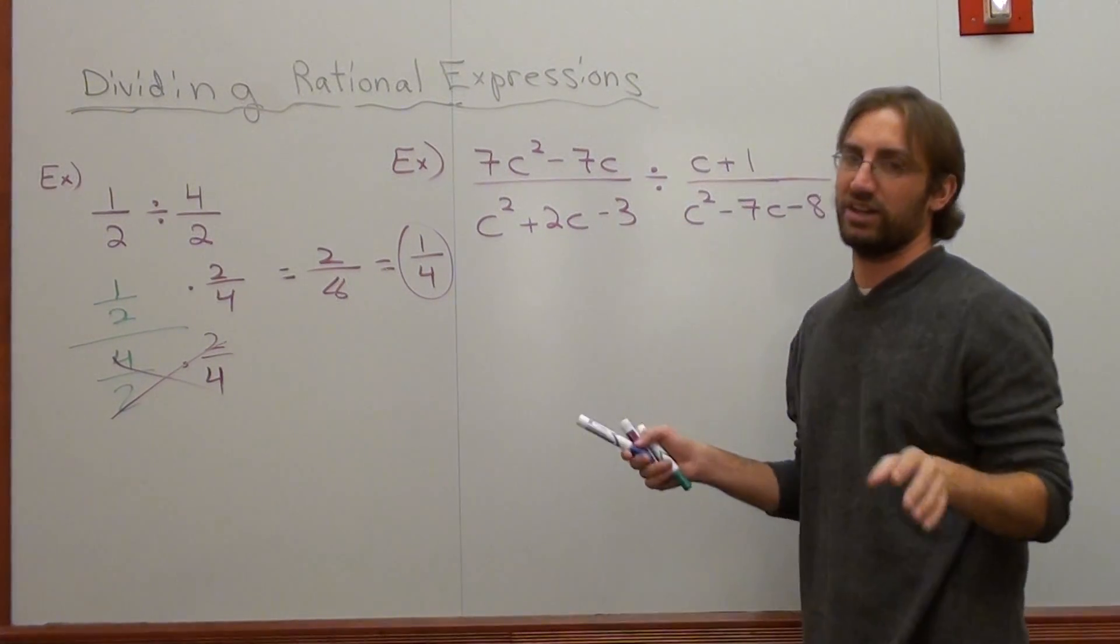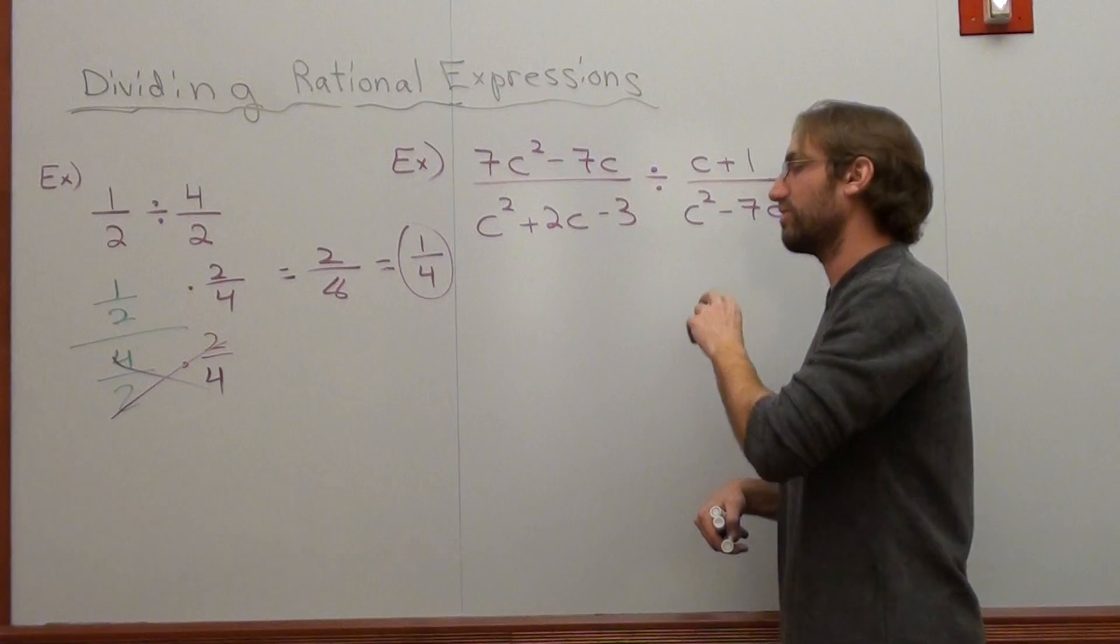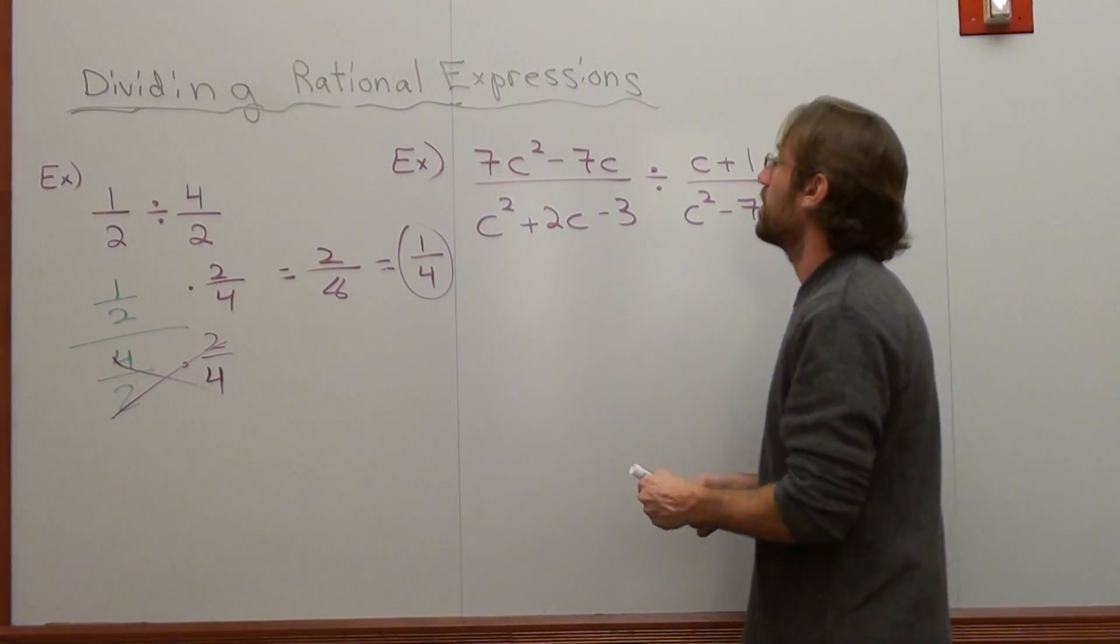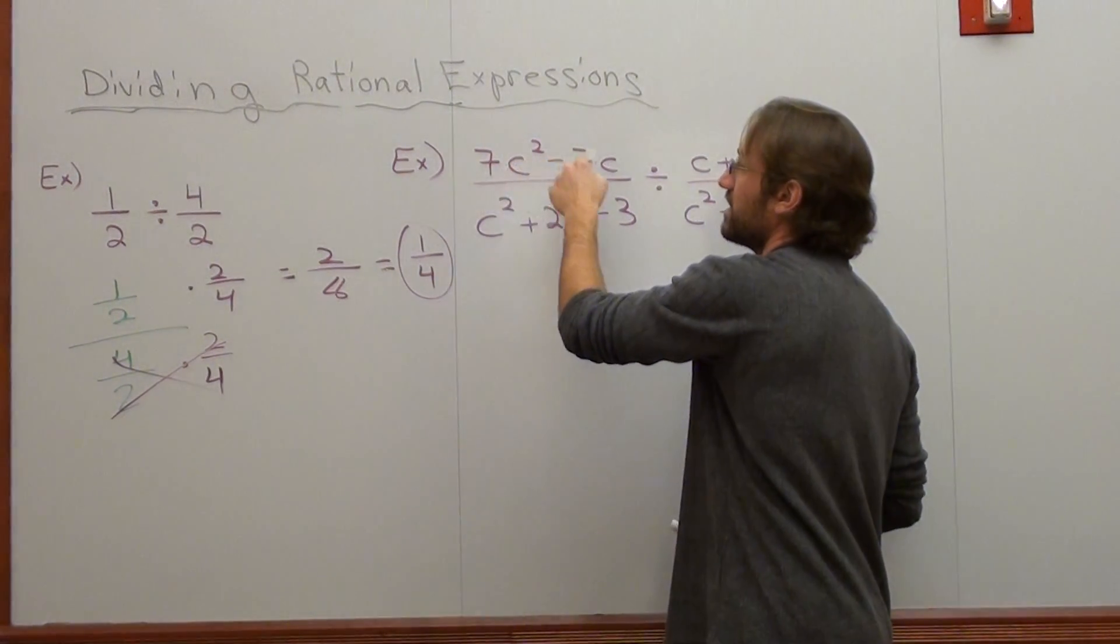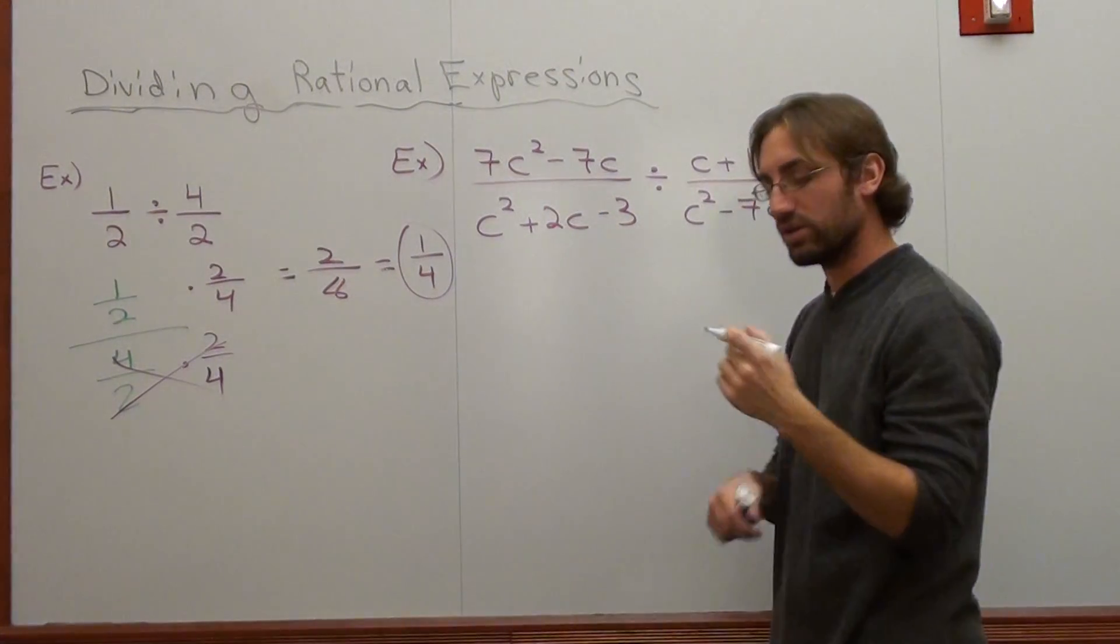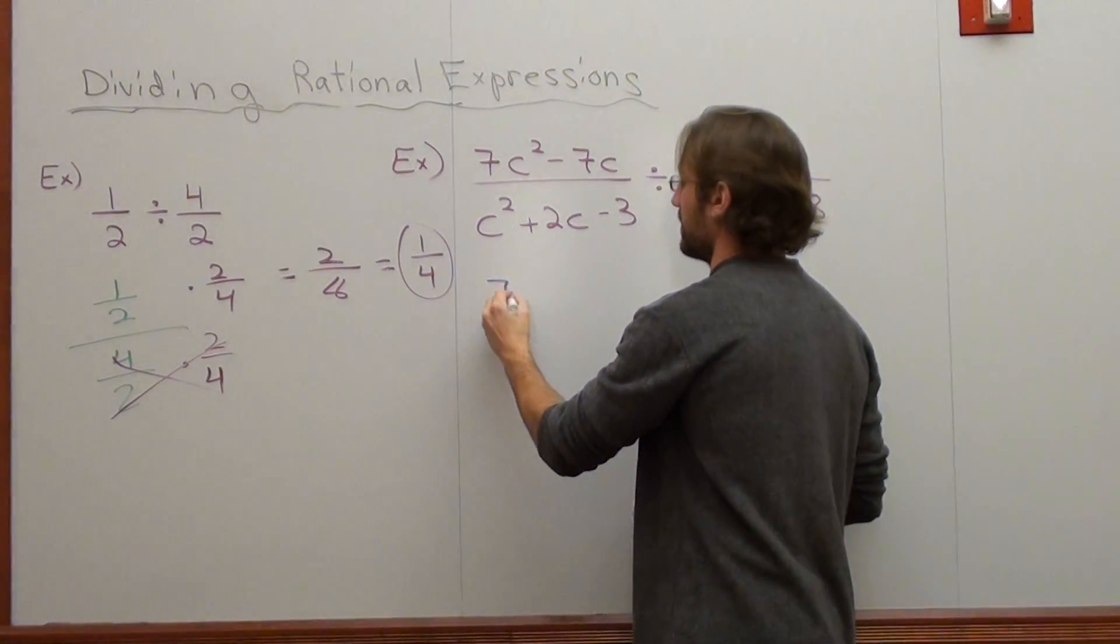But you can switch it to a multiplication, flip the reciprocal, then factor. It's your choice. So here's what I got. What can I take out of 7c² and 7c? What can I divide both terms by? What's my GCF? It's 7c.